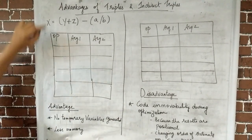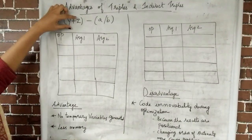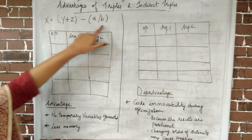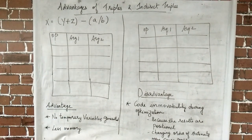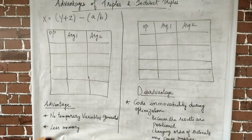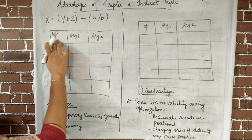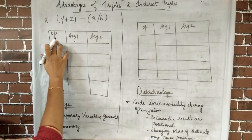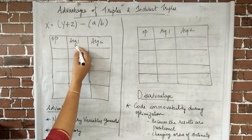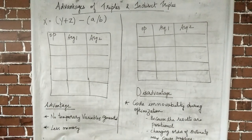Since brackets have higher precedence, we have y + z within brackets and a / b within brackets. We will start execution from left to right. Since we are constructing a triple, the record contains only three fields: one for storing the operator, one for operand 1, and one for operand 2. Let us write the triple for this expression.